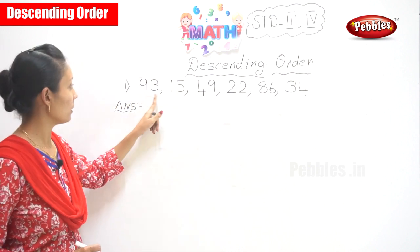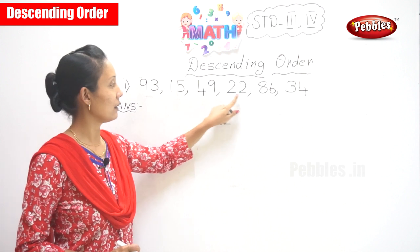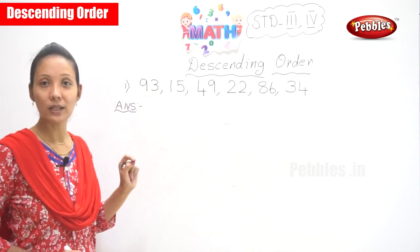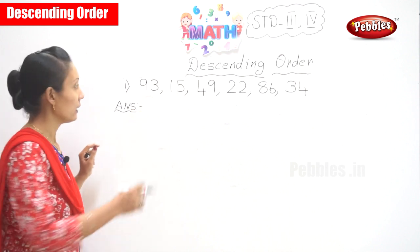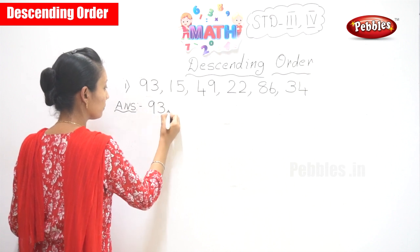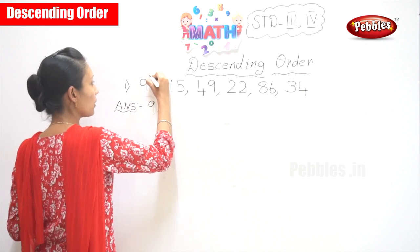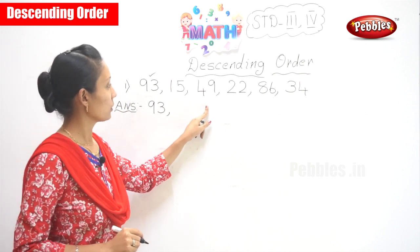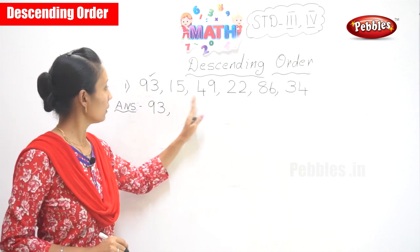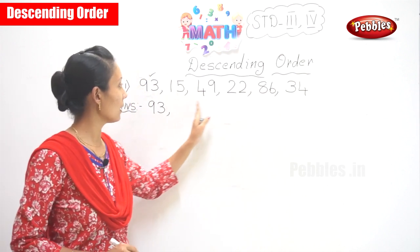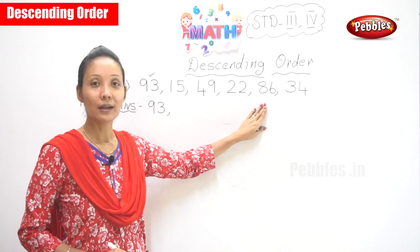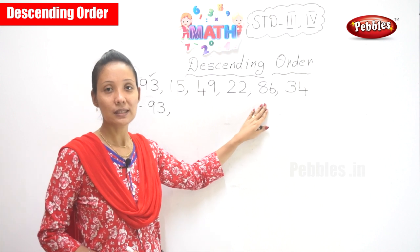So the first digits are: nine, one, four, two, eight, and three. The largest is 93, shall we write 93 here? Yes. Now you have finished 93. Now you have 15, 49, 22, 86, 34. Which is the next biggest number? Yes, you have 8, so it is 86.